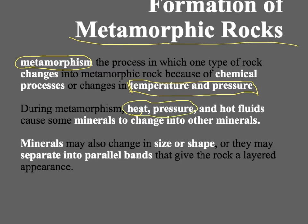When metamorphism happens, heat, pressure, and some of the hot fluids under the earth — could be magma, could be water, or other fluids — cause chemical changes in the minerals, so some minerals become other minerals. Some minerals also change in size or shape. Every once in a while, we get these parallel bands of minerals, giving the rock the appearance of different layers.